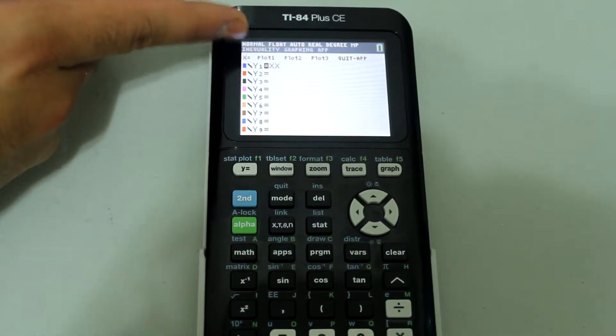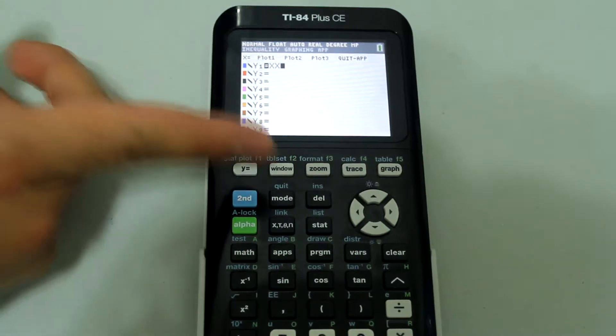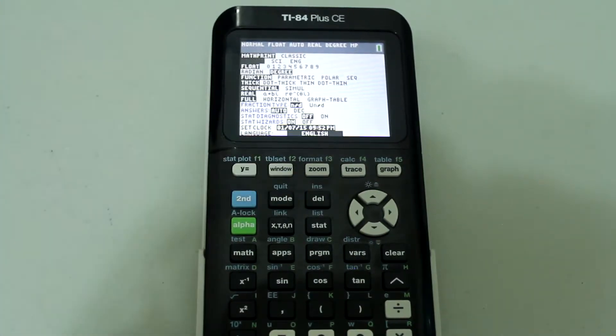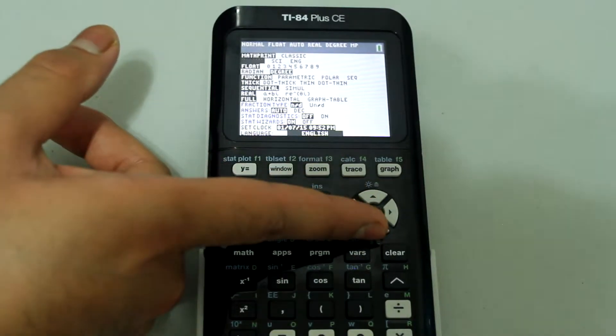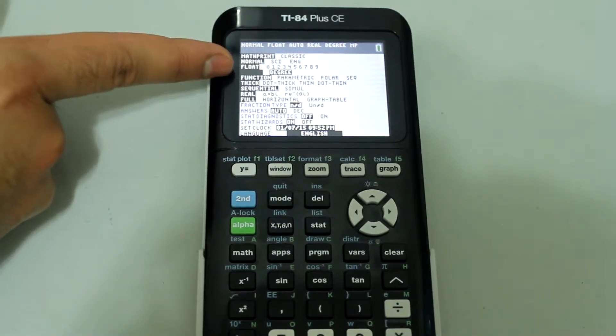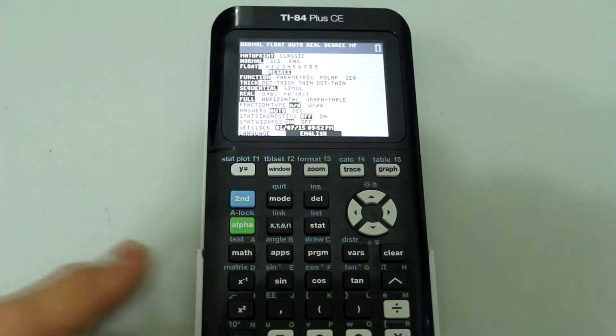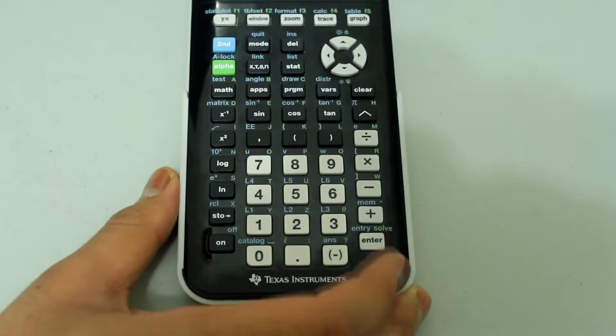So what I am going to do is press mode and arrow down until the cursor is blinking on radian and press enter. So radian is selected, otherwise it won't work.